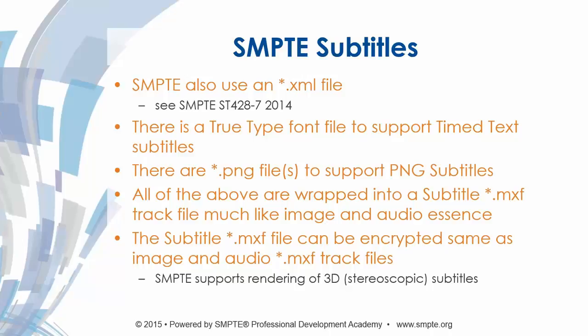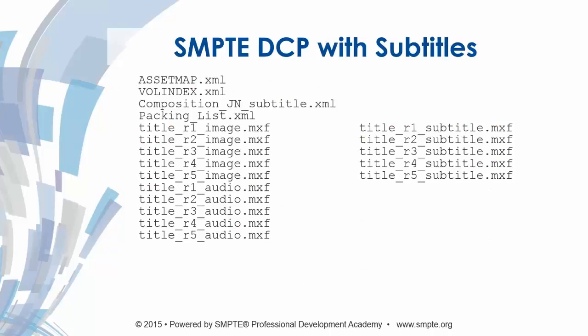So basically, the SMPTE subtitles are wrapped up into a special MXF track file. This is what the SMPTE DCP would look like: on the left we have the asset map, volume index, and five reels of image and audio. On the right, instead of separate directories, we now have five separate MXF files representing the subtitles for each of the reels.